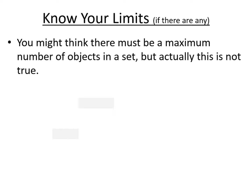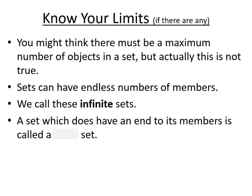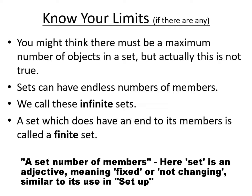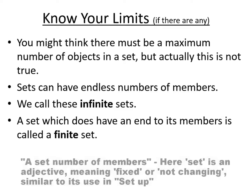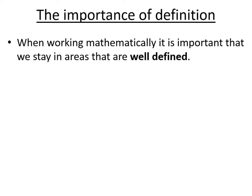We need to know if there are limits to our set. Sets can have an endless number of members, and in this case we call them infinite sets. A set which does have an end to its members — a set number of members — is called a finite set. When we're making sets, if we're setting a rule, we need to make sure we have an easy way to define that set. We need a rule that lets us know: is this object in or out of the set? If we can't say that for sure, then our set is not well defined.